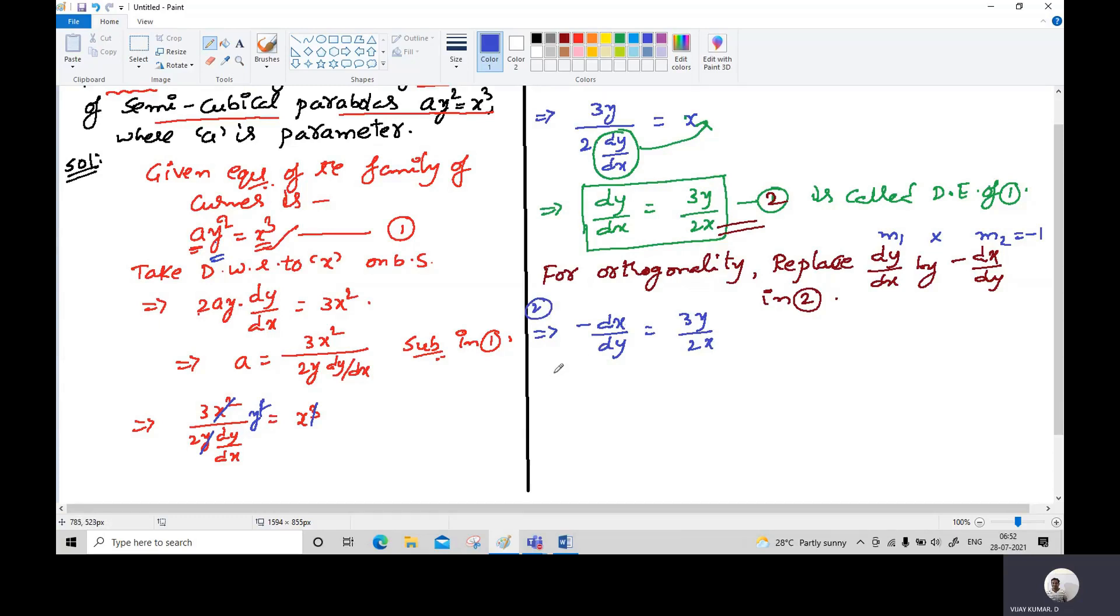Separate the variables on both sides, meaning all terms of x to the dx side and all terms of y to the dy side. Sending the negative to the right side, you get 2x dx = -3y dy. Take integration on both sides.